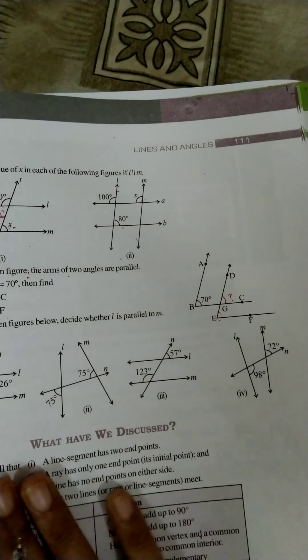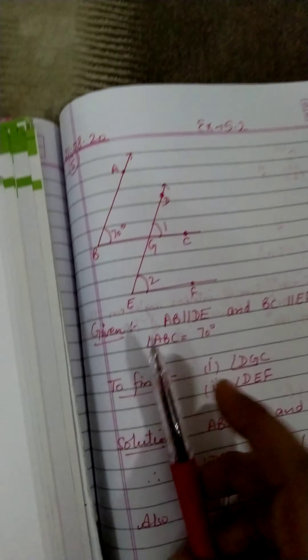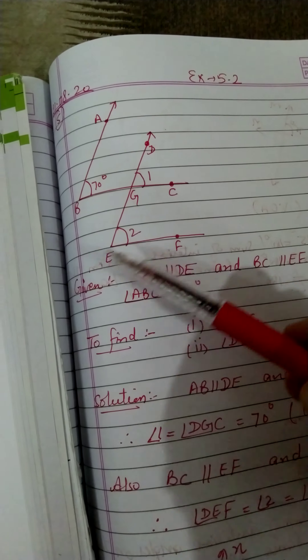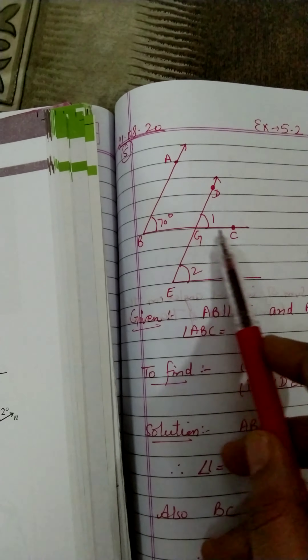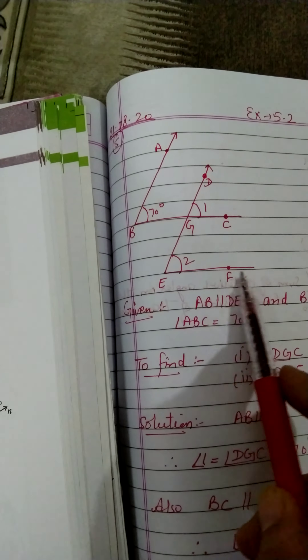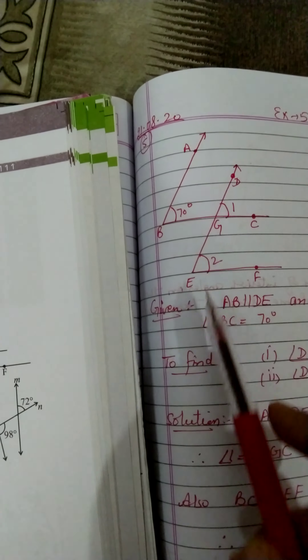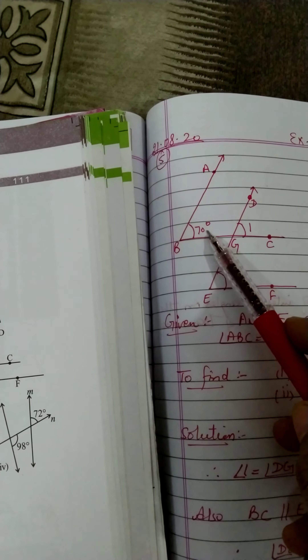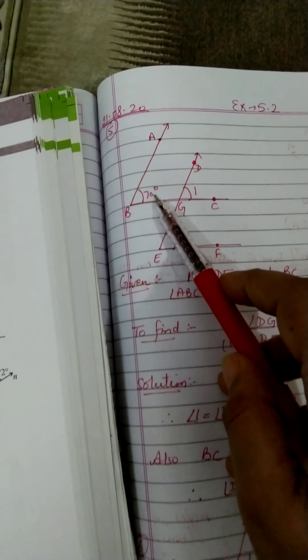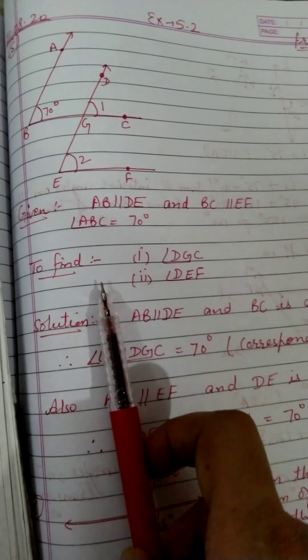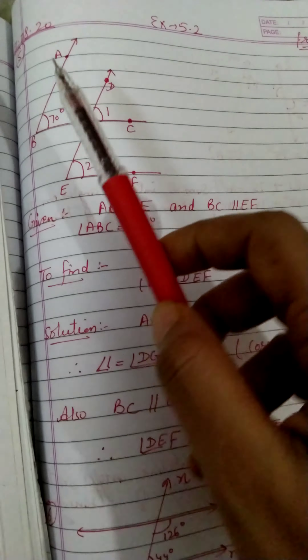First we will write what is given: AB parallel to DE, BC parallel to EF, and angle ABC is 70 degrees — यह हमें given है। हमें find क्या करना है, यह लिखेंगे।